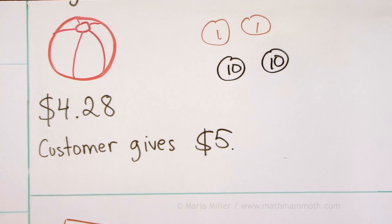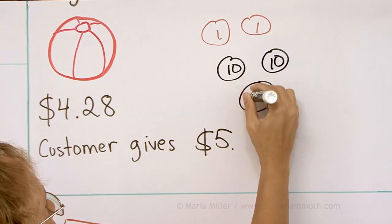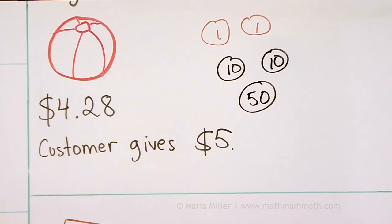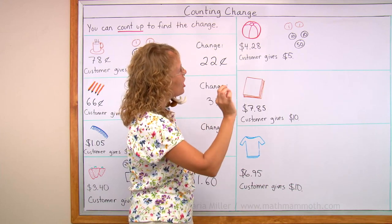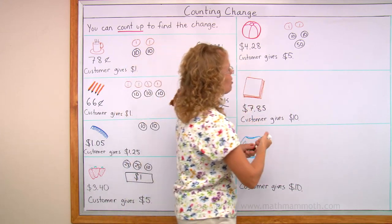And then from $4.50, I add $0.50 to go to the next whole dollar. So $0.50. This could be two quarters too. So in total, the change is $0.72.